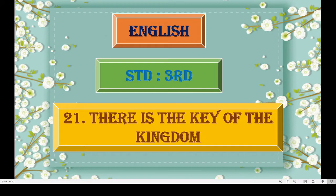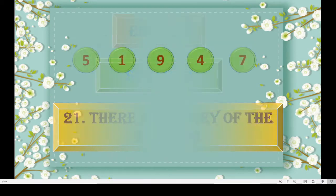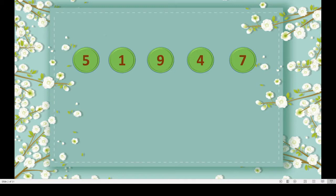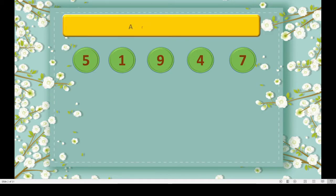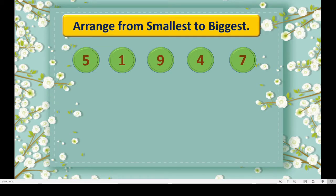First we will do one activity, then we will proceed to our poem. Here you can see some numbers. We have to arrange these numbers from smallest to biggest. We can see 5, 1, 9, 4 and 7. You know all these numbers and you know the value of these numbers. Now we will arrange these numbers from smallest to biggest.